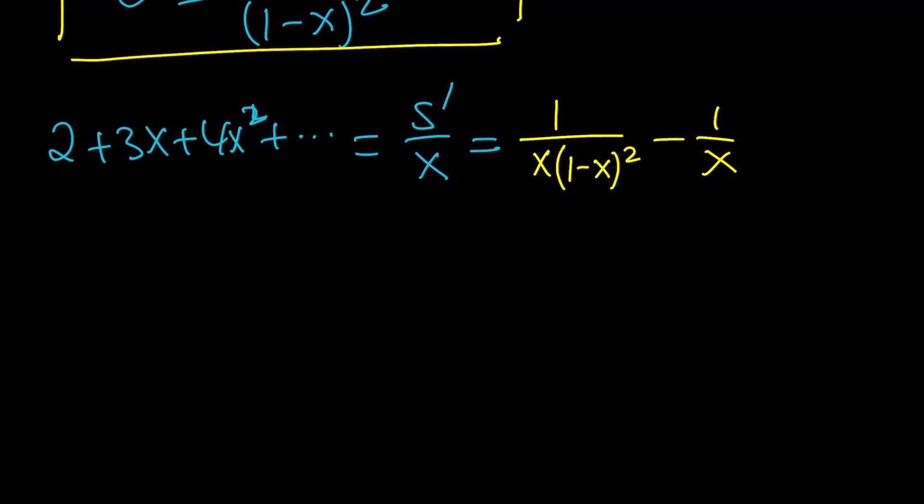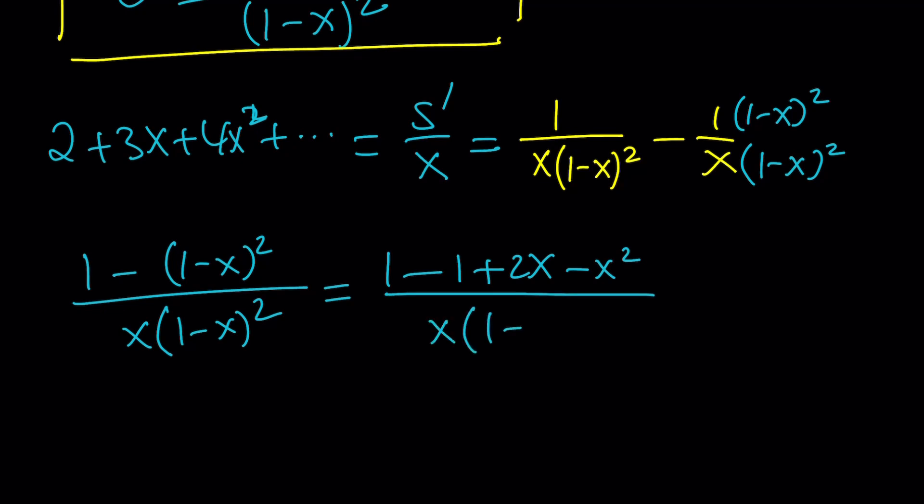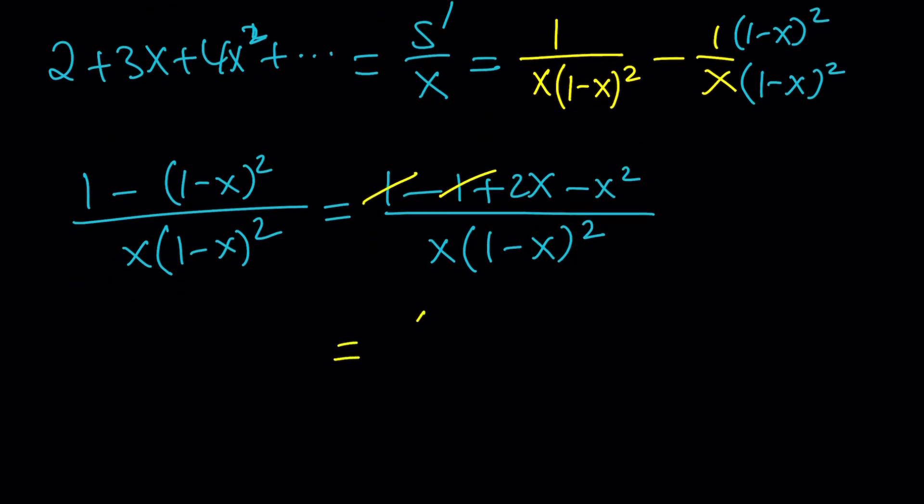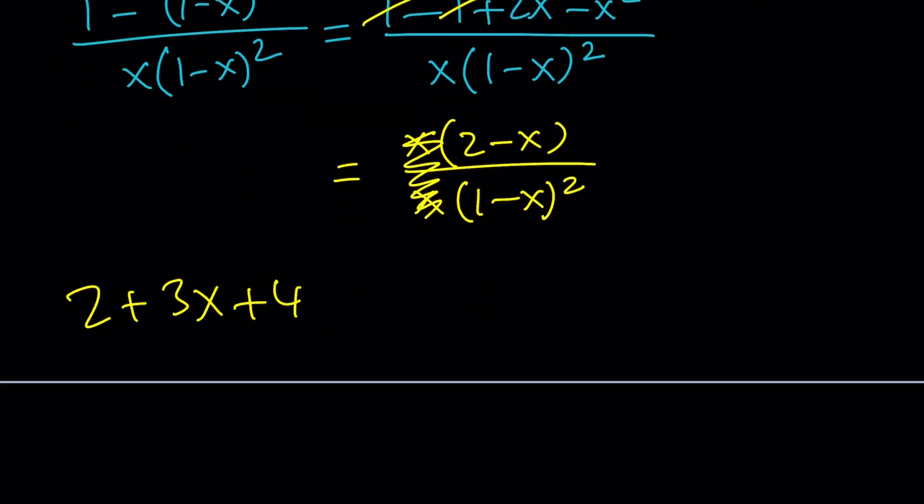So to simplify this, I'm going to make a common denominator. Multiply by 1 minus x squared, top and bottom. That's going to give me 1 minus 1 minus x quantity squared, divided by x times the quantity 1 minus x squared. And if you expand it, you're going to get 1 minus 1 plus 2x minus x squared. Don't forget to negate everything inside the parentheses. And then x times 1 minus x quantity squared. 1 minus 1 is equal to 0. We can factor out x in the numerator, which is nice because we'll be able to simplify the x or divide by it. x cancels out, and we end up with this sum. In other words, 2 plus 3x plus 4x squared is equal to 2 minus x divided by the quantity 1 minus x squared.